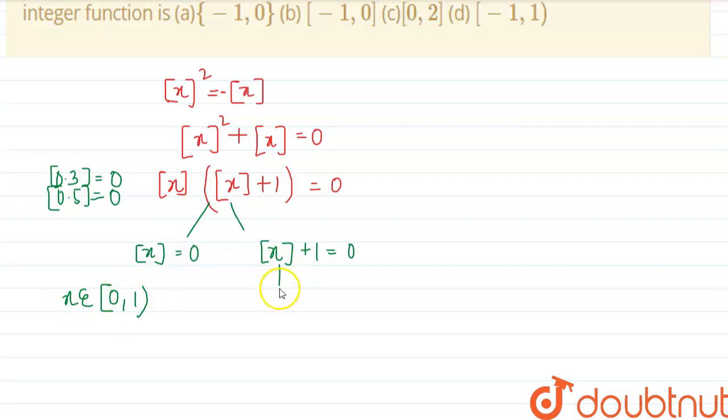So this will belong to 0 to 1, and when this plus 1 is equal to 0, that means gif of x is equal to minus 1. So this means x belongs to minus 1 to 0.